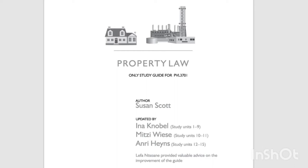To sum up: in a broad sense, the word 'property' in the law of property refers to everything that forms part of a person's estate. In a narrow sense, and for the purposes of this module, property law refers to the law of things, which is the system of legal rules that regulates legal relationships between legal subjects in regard to a particular legal object, namely a thing.